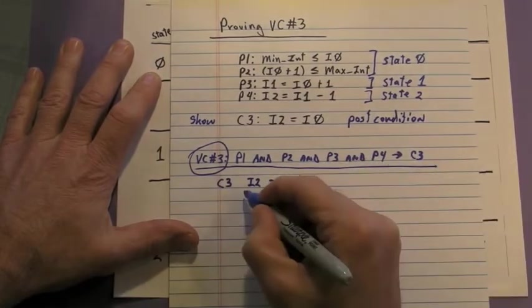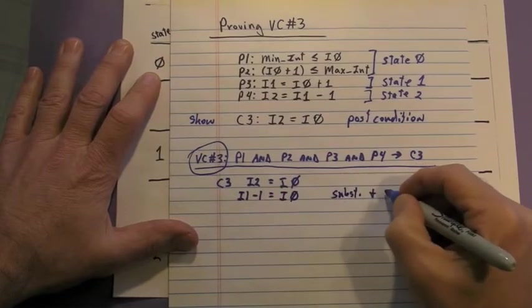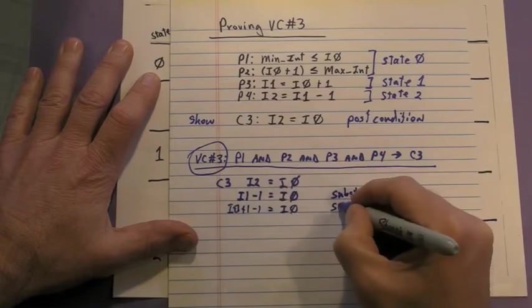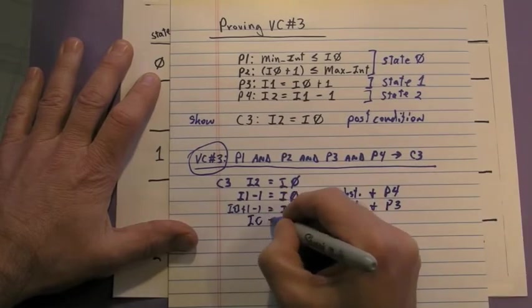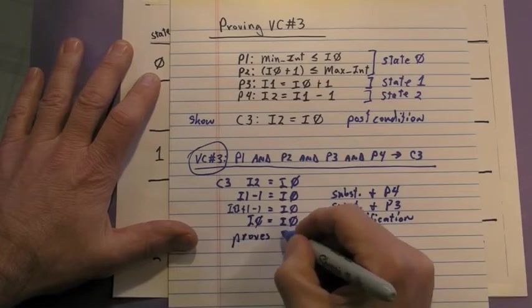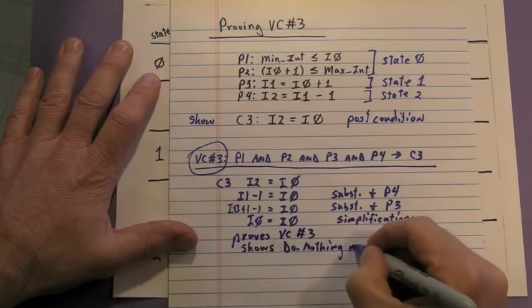Start the proof with I2 equals I0. Substitute I1 minus 1 for I2. Then substitute I0 plus 1 for I1. Then simplify. That proves VC number 3 and shows that do nothing meets its specification.